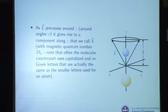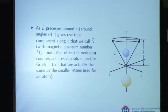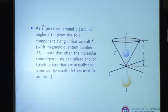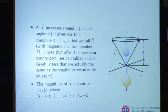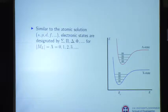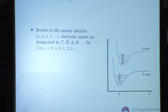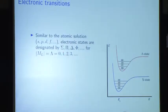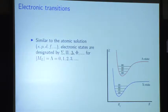In the molecular world we use either capitalized or Greek letters that are the same as those used with the one-electron atom. The magnitude of lambda along the Z axis is given by M sub L times h. Similar to the atomic solution where we had SPDF for electronic states, here we designate them by sigma, pi, delta, phi for M sub L equals 0, 1, 2, 3. Sigma states are for the absolute value of M sub L — lambda — equal to zero.